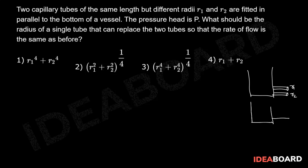If I replace these two capillary tubes with a single capillary tube having the same length and radius R, then the volume flow rate through this should be the sum of volume flow rates of individual capillary tubes. Then I can write V1 dot plus V2 dot should be equal to V dot.